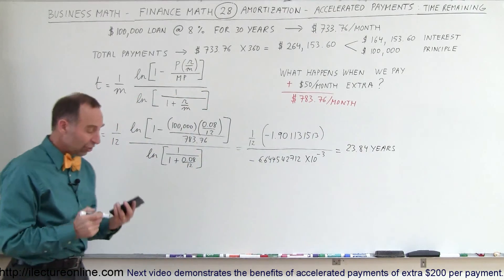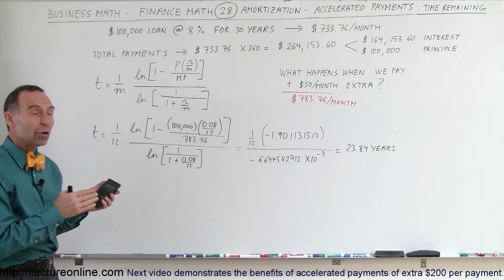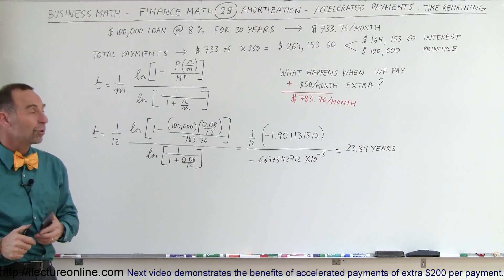Wow, by just paying an extra $50 a month, I've changed my 30-year loan into a 23.84-year loan.